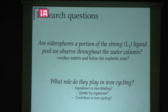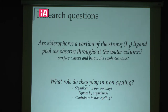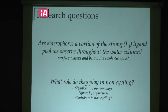Since I come from a background in voltammetry, I've been really interested in whether siderophores are truly comprising this ligand pool, especially since they appear down to 6,000 meters in the ocean. I want to know if we can see them below the euphotic zone and why they're there. In general, I'm interested in their role in binding iron, whether organisms are taking up that iron, and how they're contributing overall to iron cycling.